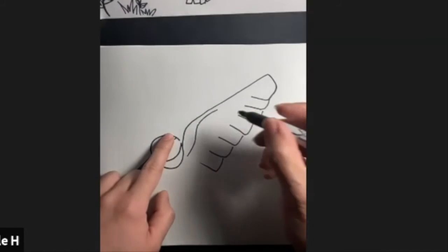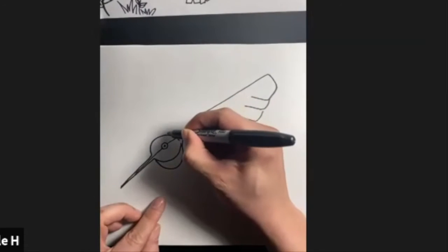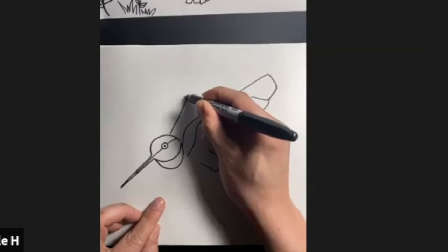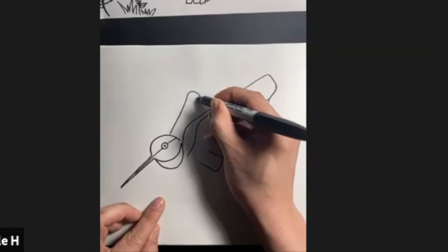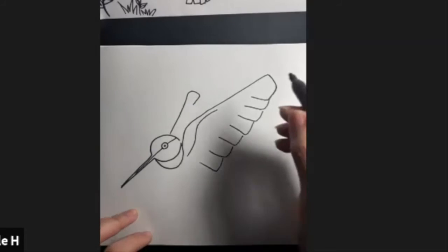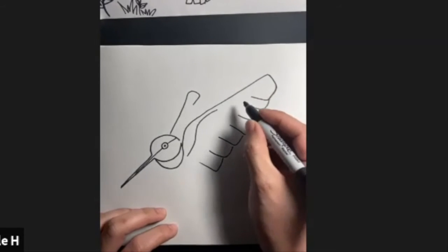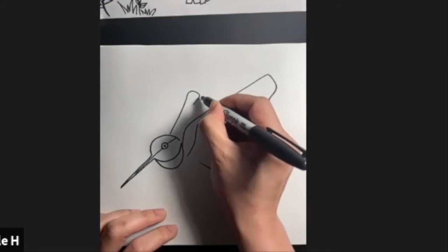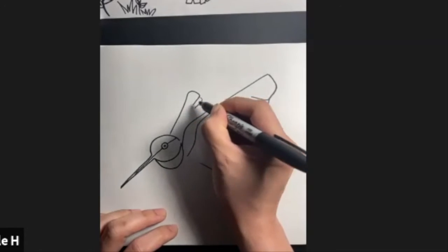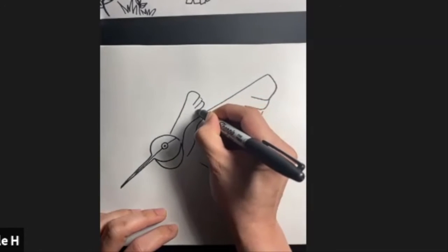Next, from the top of its head, we're going to draw a curved line all the way up. That's going to be the other wing. Kind of like a hook. And we're going to continue with smaller version of it down here.